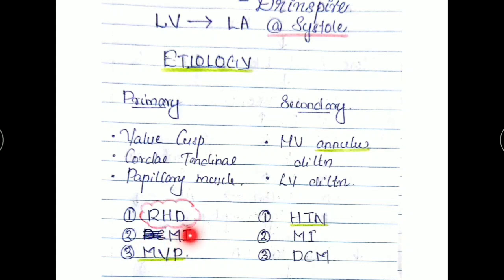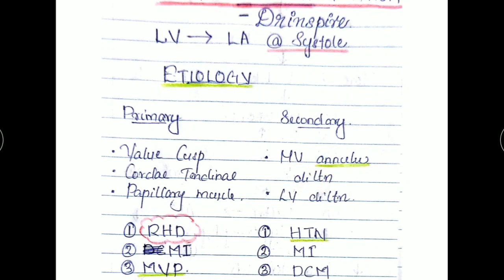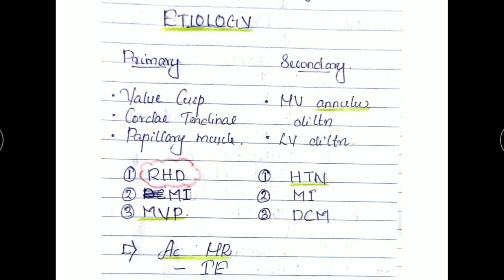In secondary cause, which affects the mitral valve annulus causing its dilation or left ventricular dilation. Most common being hypertension, myocardial ischemia which damage the left ventricle, and also dilated cardiomyopathies.